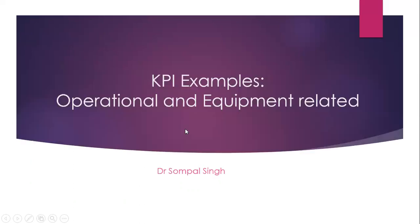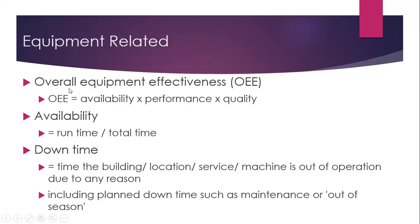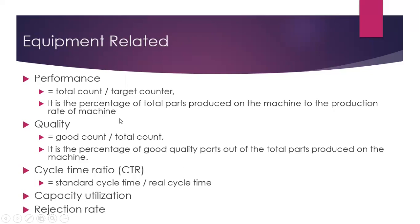Some examples related to operational and machine or equipment-related KPIs include: production efficiency, total cycle time, throughput, and error rate. Equipment-related KPIs include overall equipment effectiveness, availability of equipment, downtime of equipment, performance of equipment, quality of production, cycle time ratio, capacity utilization, and rejection rate.